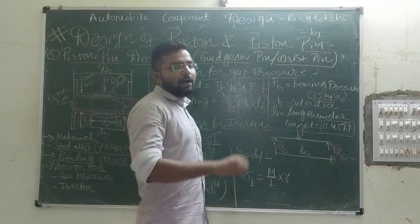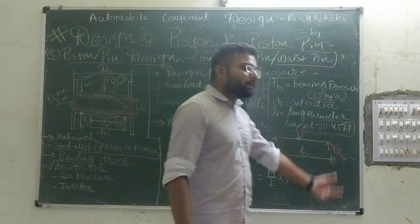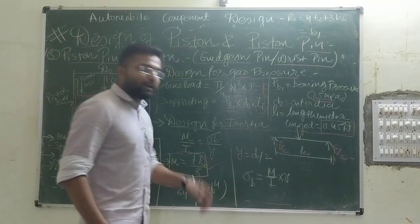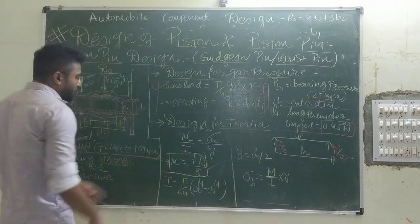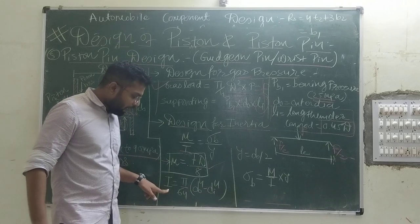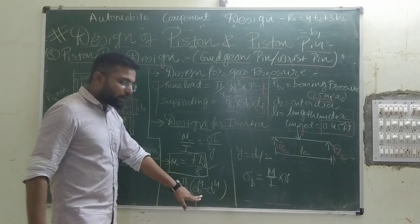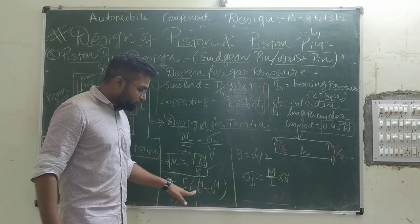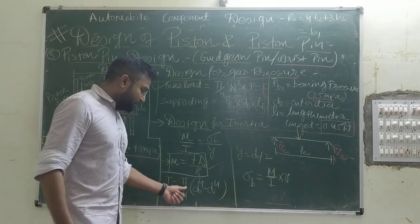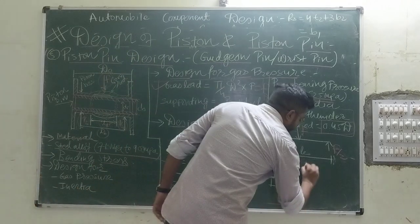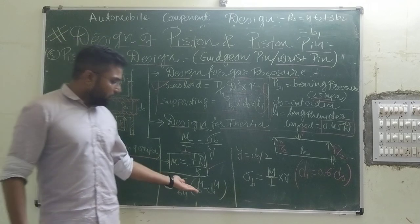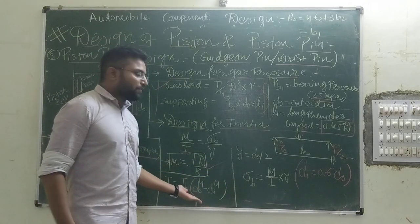For the hollow circular cross-section, the moment of inertia I = π/64 × (D₀⁴ − Dᵢ⁴), and the inner diameter Dᵢ = 0.6 × D₀. Y = D₀/2. By substituting these relations into the bending equation, you can relate D₀ and Dᵢ and solve for the outer diameter. The limiting bending stress σ_B is around 480 MPa to 780 MPa depending on the material. With bearing pressure taken as 29 MPa for steel alloy, you can determine D₀ from the bearing equation and then find Dᵢ = 0.6 × D₀.